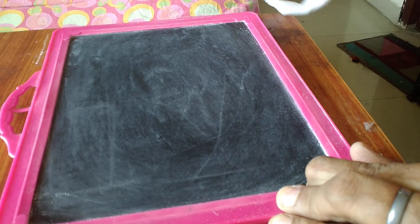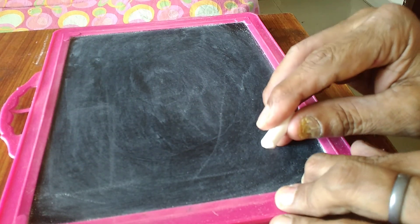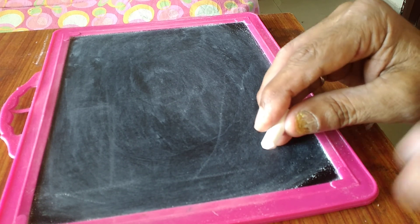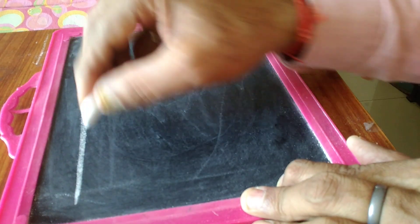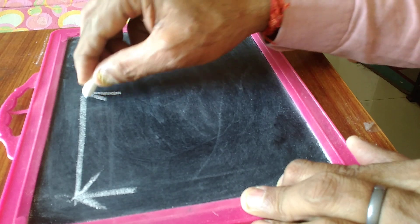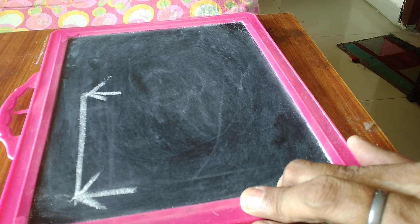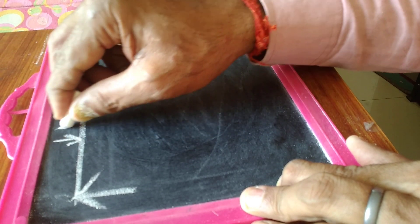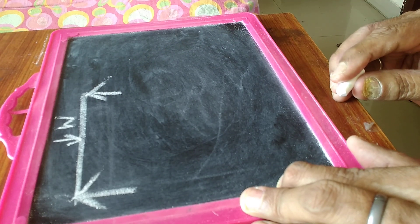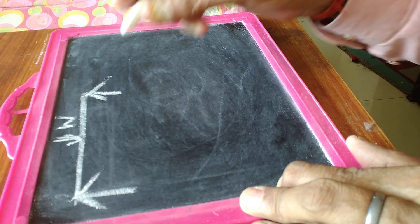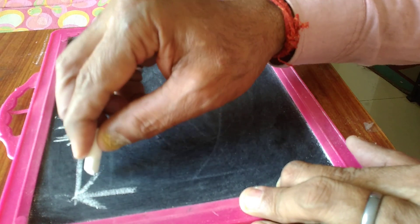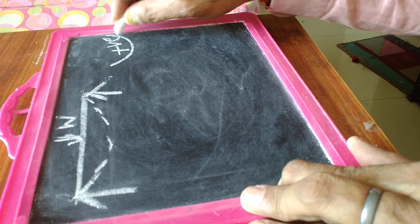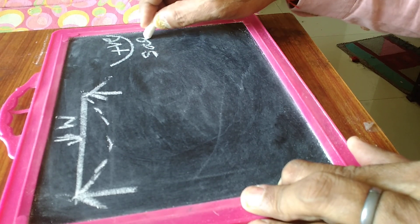Again, see a simply supported beam. Suppose this is a simply supported beam, both ends supported with two supports, and one middle load is W. Then due to this loading, what will be the deflected shape of this beam? The beam will be like this. That means this is positive sagging, positive bending moment.